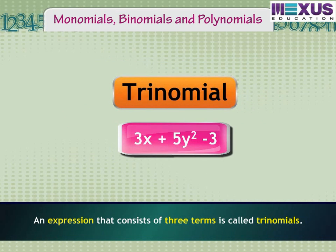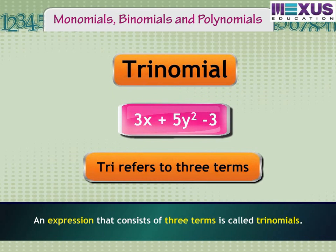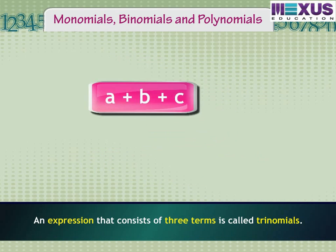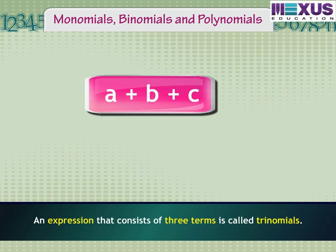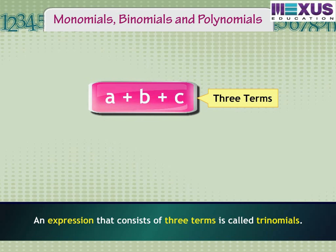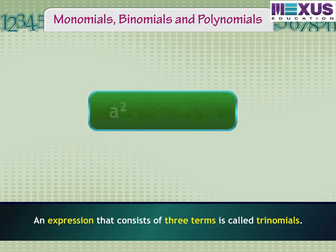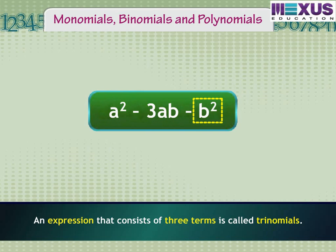An expression which consists of three terms is called a trinomial. Here 'tri' refers to three terms. For example, a plus b plus c has three terms: a, b, and c. Look at this expression: a squared minus 3ab minus b squared — here also we can see three terms: a squared, 3ab, and b squared. Hence it is known as a trinomial.